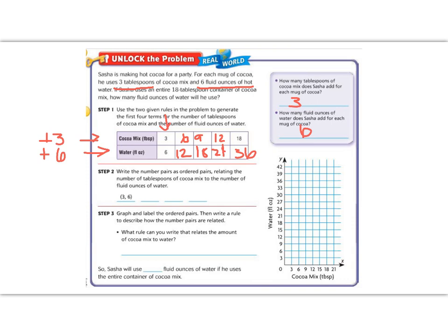So if we look at the first, we have three, six. That would be one cup. So our second one would be six comma twelve. And then our third one would be nine comma eighteen. And then twelve comma twenty-four. And lastly eighteen comma thirty-six.